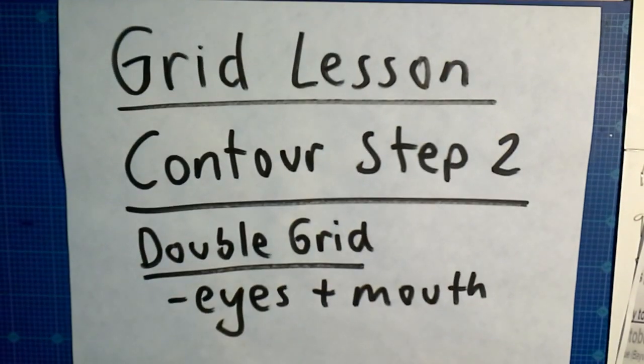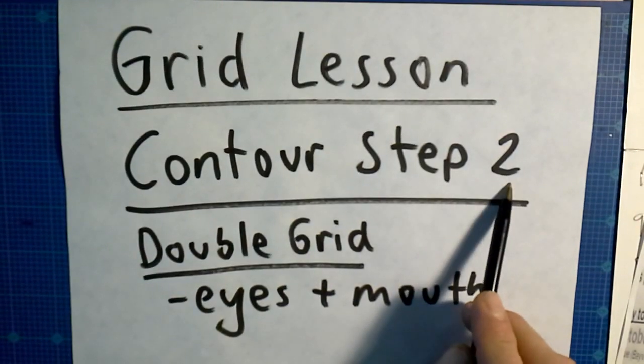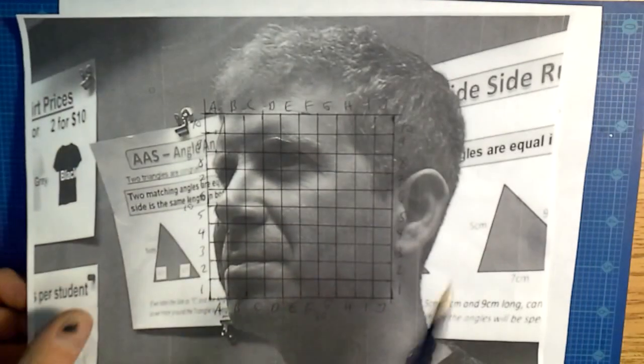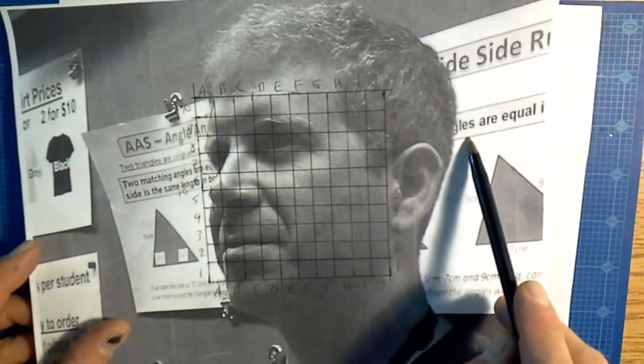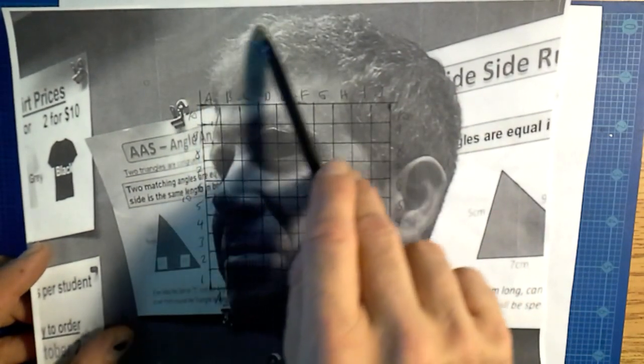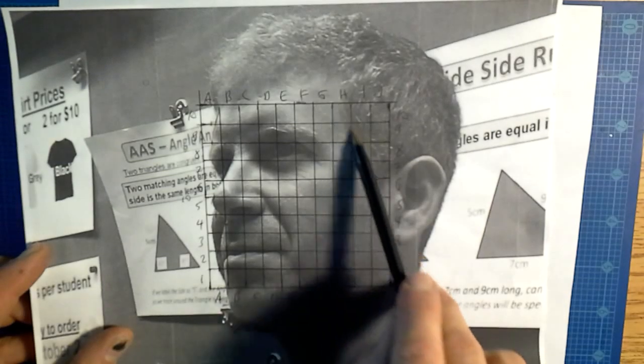Okay, so this is grid lesson contour step number two. The first step is outlining your hair. You may or may not be done. You should outline your hair. In this case I wouldn't because it's not inside my grid, but if your hair is inside your grid you would outline the hair.